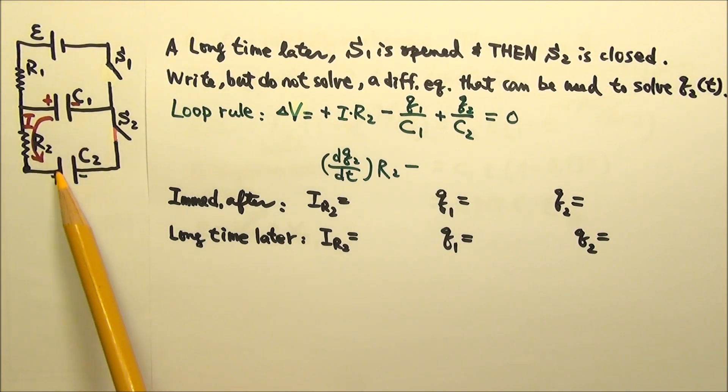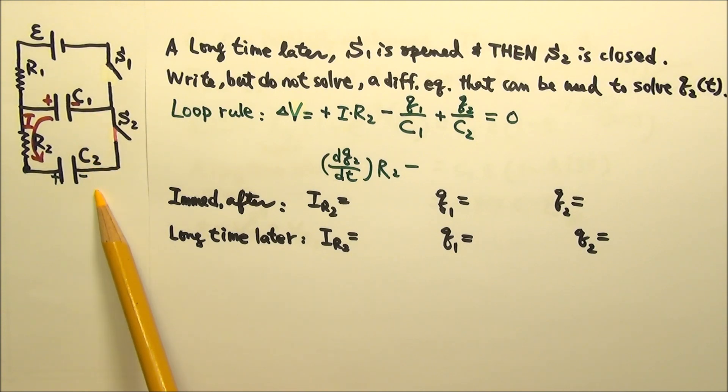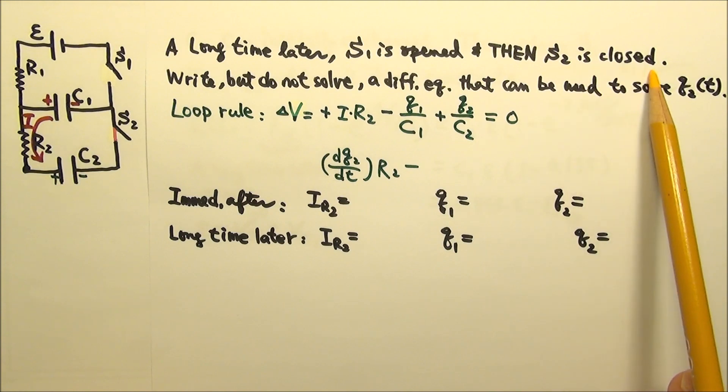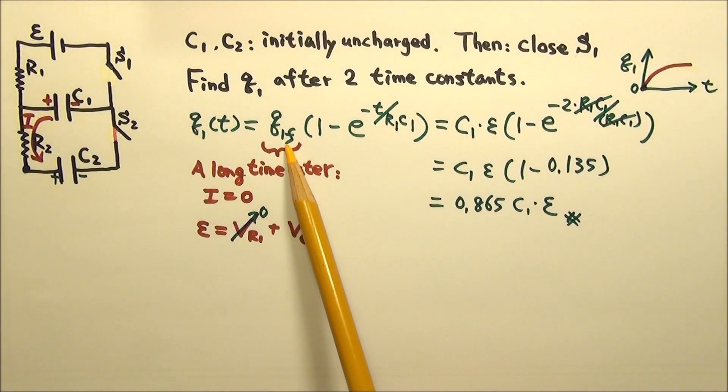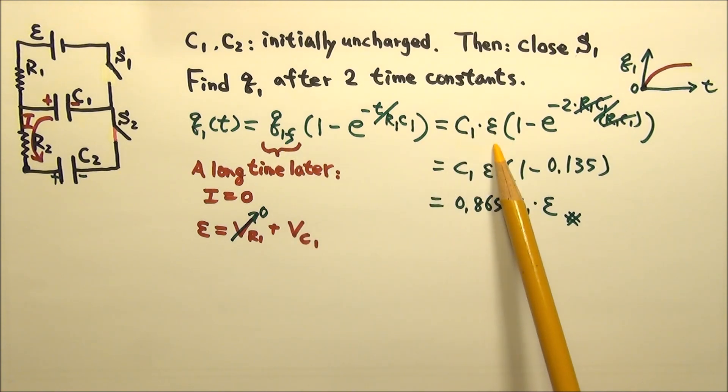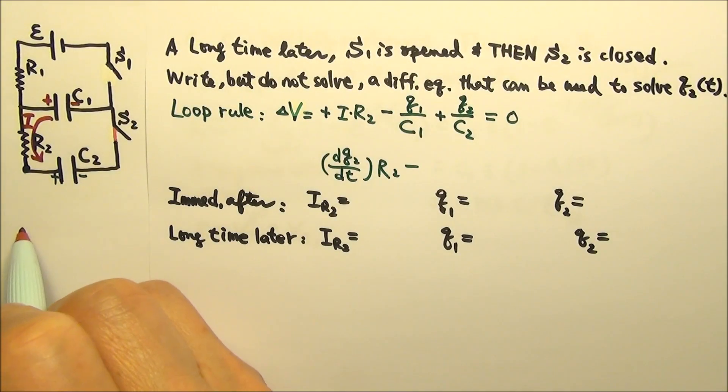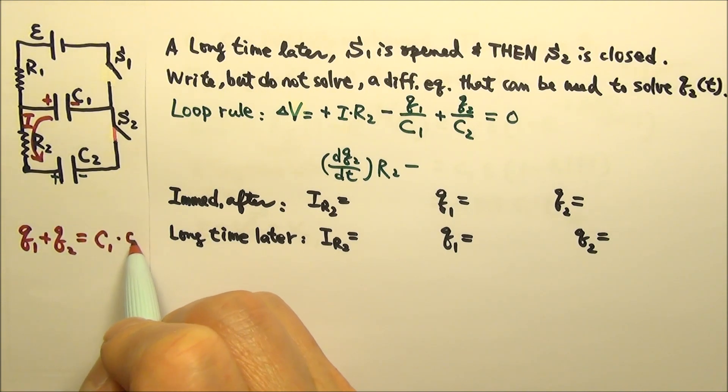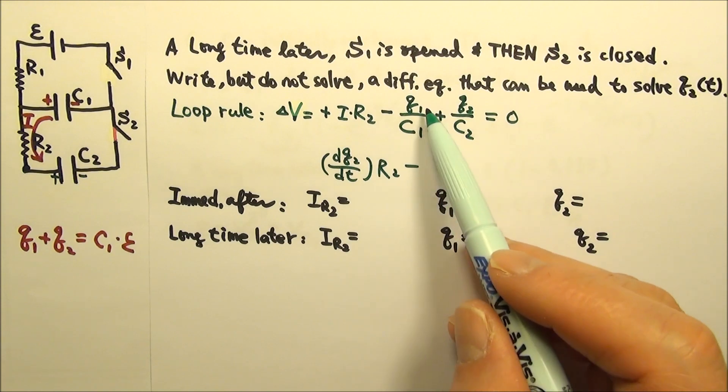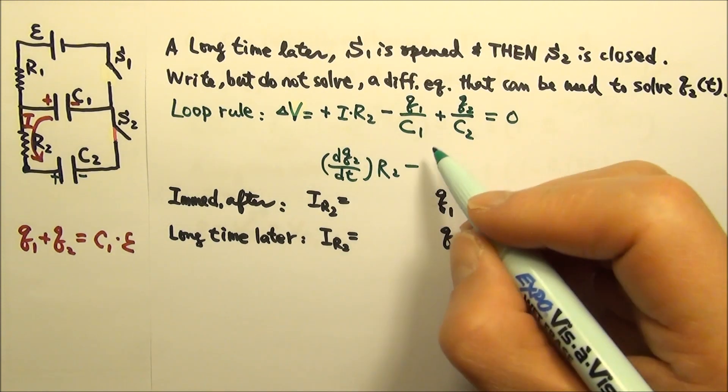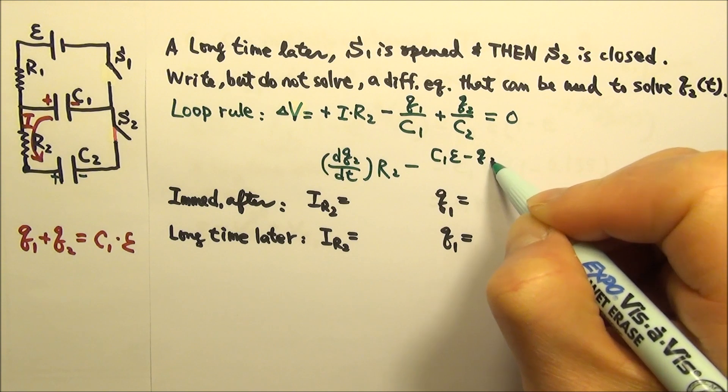When C1 charges up C2, all the charges C2 gets come from C1. So the two capacitors have to share the charges on C1 just before S2 was closed. Before S2 was closed, the final charge on C1 was C1 times E. This means Q1 plus Q2 must equal C1 times E. So we can replace Q1 with C1E minus Q2.